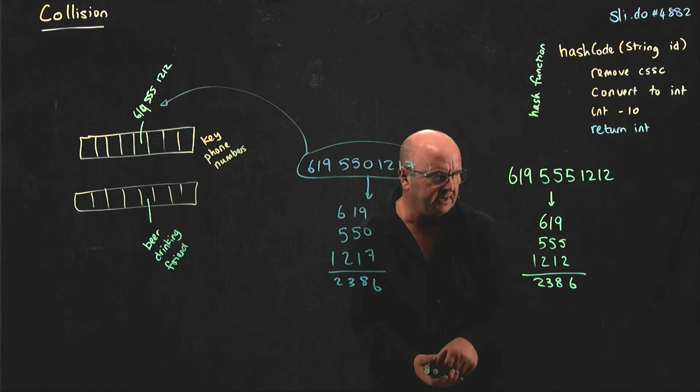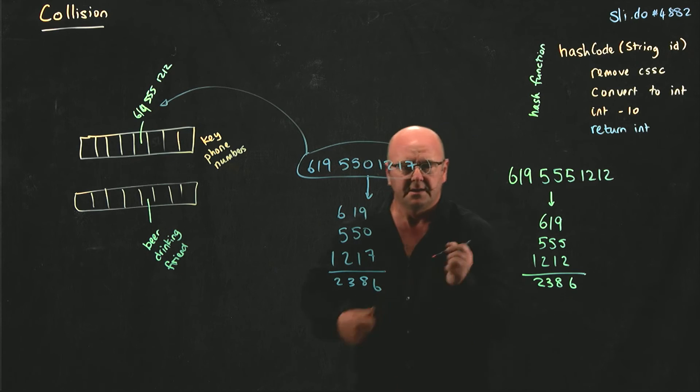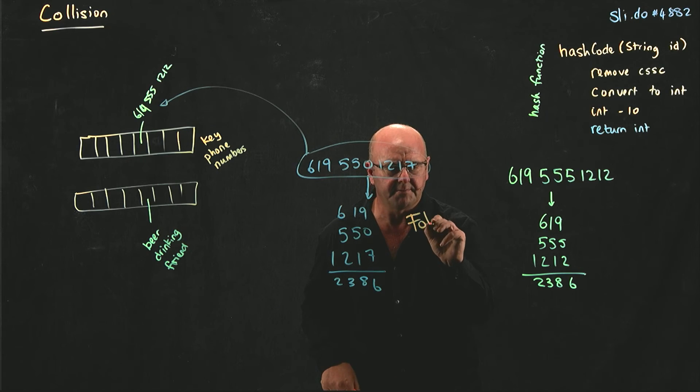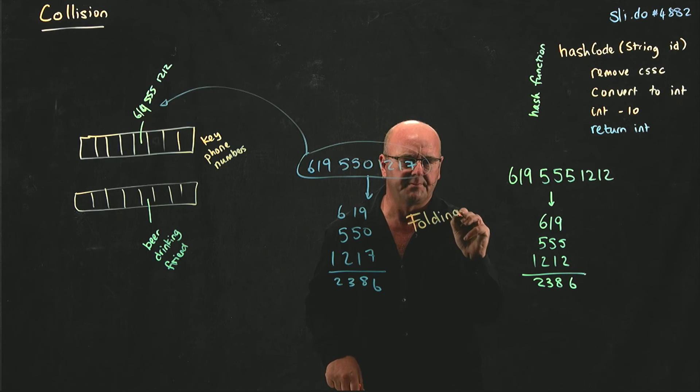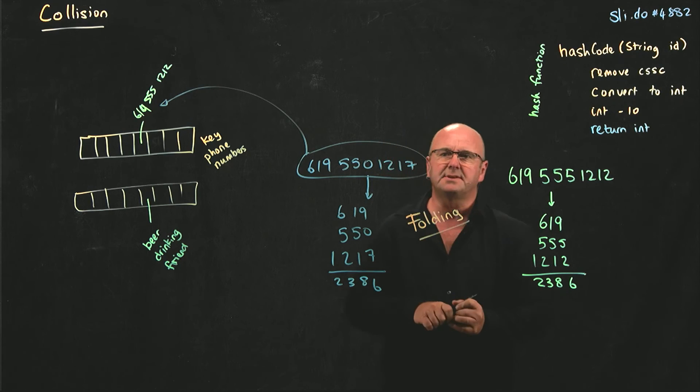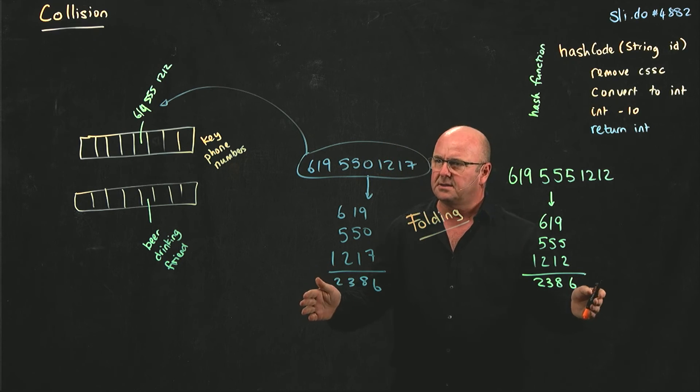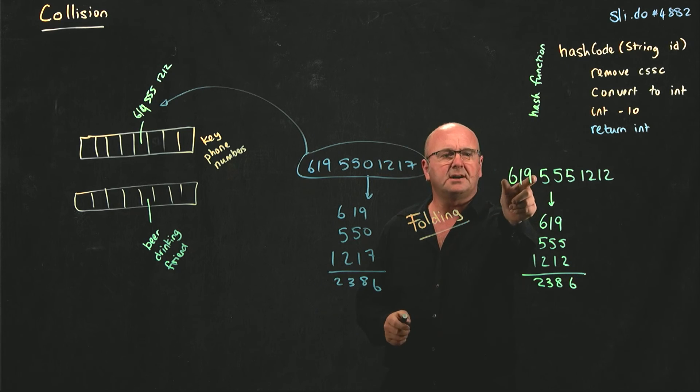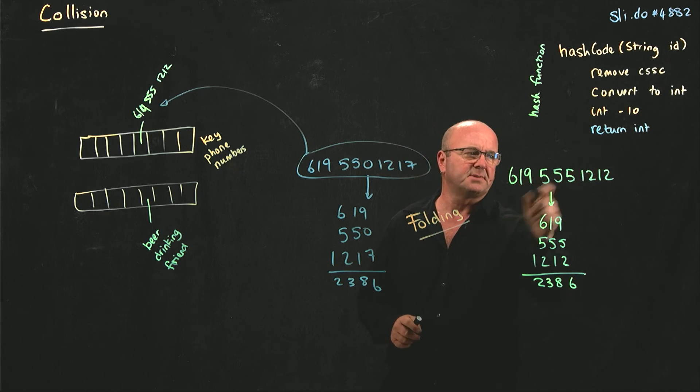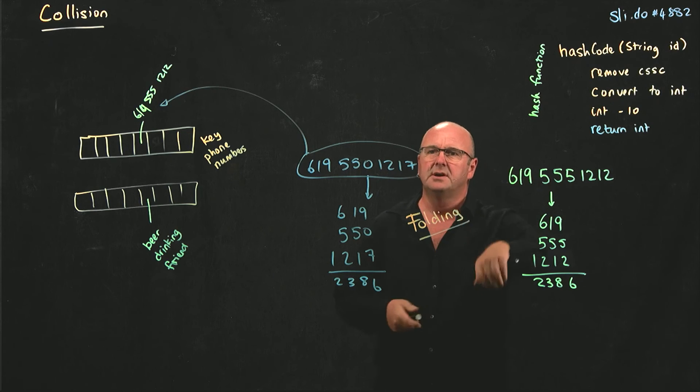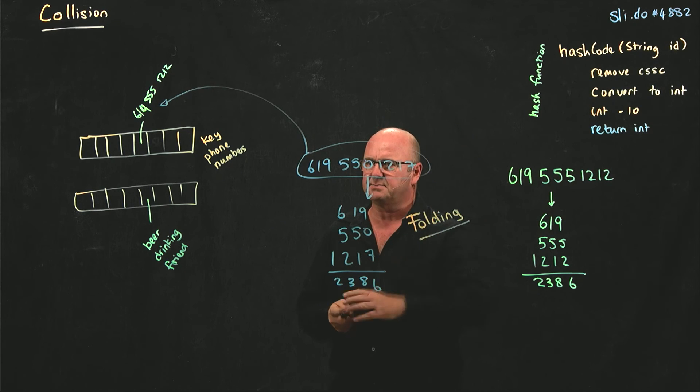This approach that I've shown you here, by the way, is called folding. Because what we do is we take a long number and we break it into parts. In a phone number, that's quite obvious because there's three parts to a phone number. You break it into parts and you add those parts up.